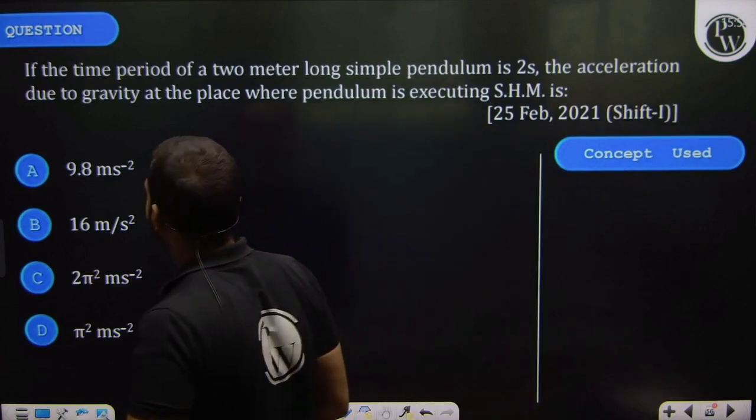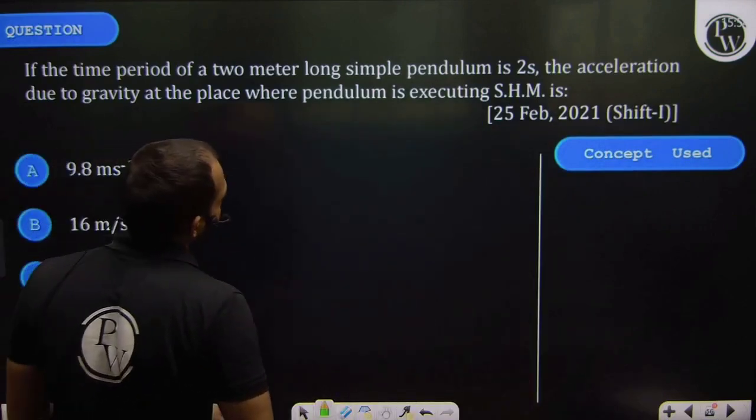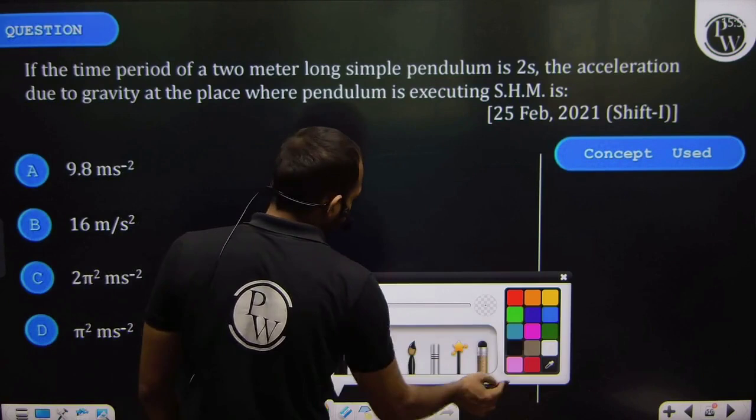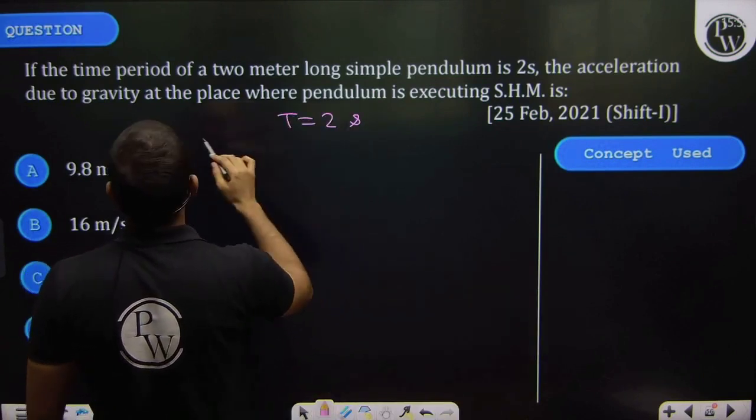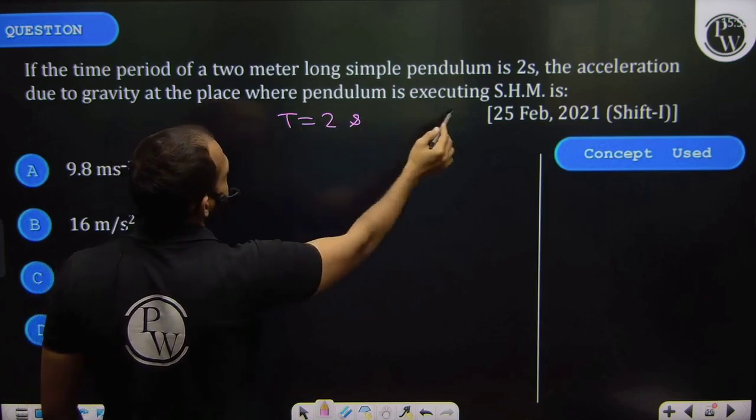Let's see this question. If the time period of a two meter long simple pendulum is two seconds, the acceleration due to gravity at the place where the pendulum is executing SHM is?